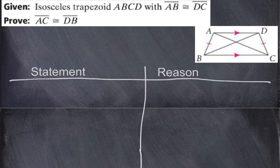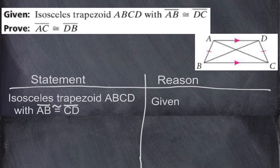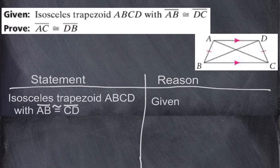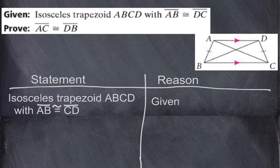We always want to start with a given. Isosceles trapezoid ABCD with AB congruent to CD — that is given. Now we're trying to prove that diagonal AC is congruent to diagonal DB.